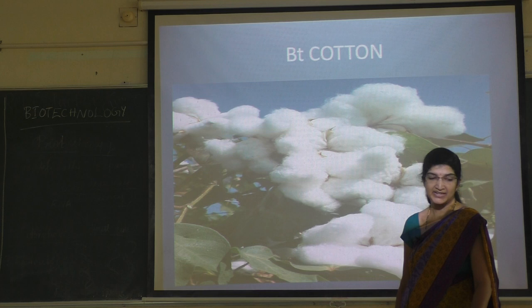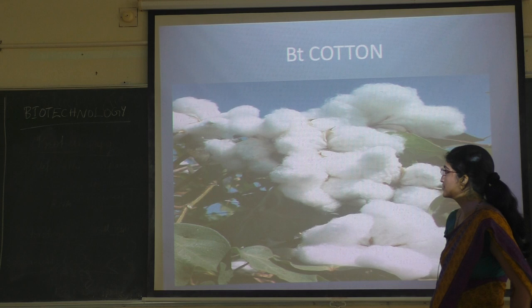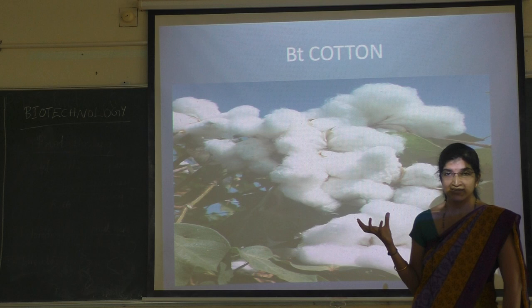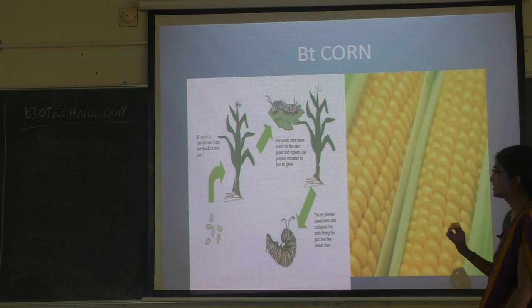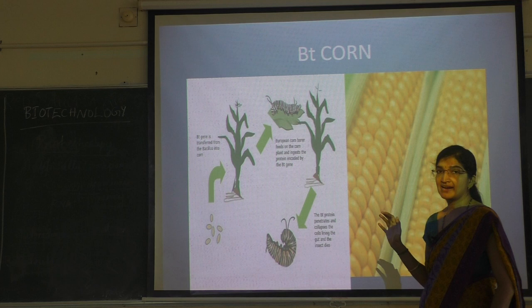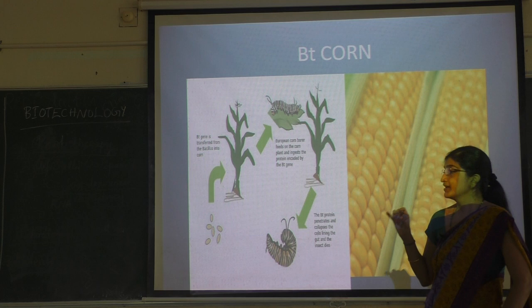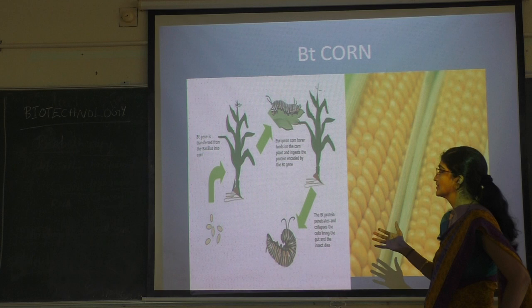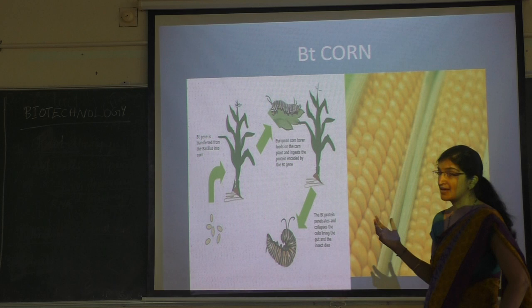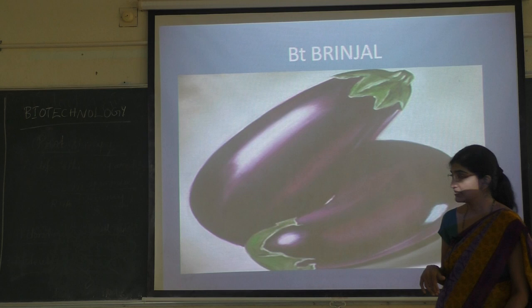Some examples of Bt plants: Bt cotton produces more yield and is free from different types of budworms. Then Bt corn — usually worms known as corn borers feed on corn. In Bt corn, the gene specific for this particular corn borer has been ligated, so the larvae of the corn borer are killed. The plant itself produces resistance, so there is no need to apply any type of insecticide.